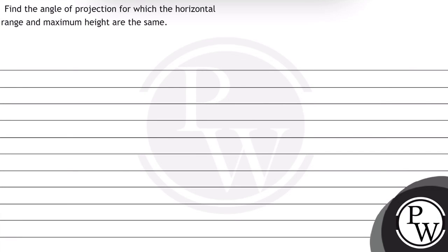Hello, let's read this question. The question says: find the angle of projection for which the horizontal range and the maximum height are the same. In this question, the key concept is projectile motion.